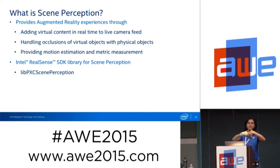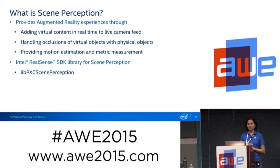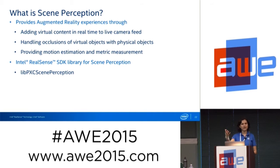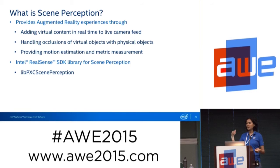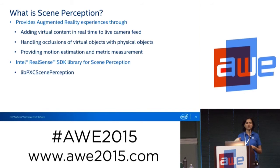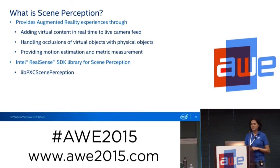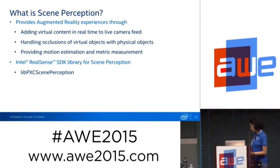Another component of scene perception is metric measurement. This is a 3D camera, not just 2D — it has a depth component. If I'm capturing a 3D space and I want to measure the distance between any two points, it's not a simple X-Y differential; it has to take depth into consideration. That is another capability available within the scene perception module. The SDK for the rear-facing camera — the R200 — is the camera Kevin showed, which has depth capability.